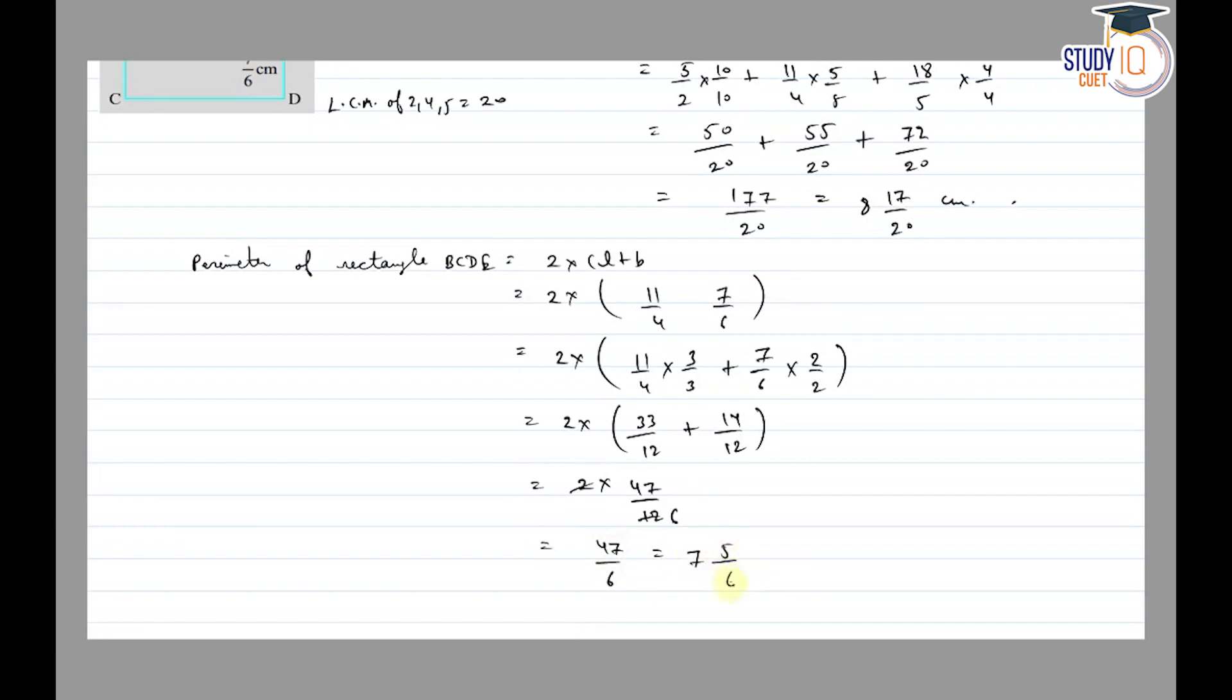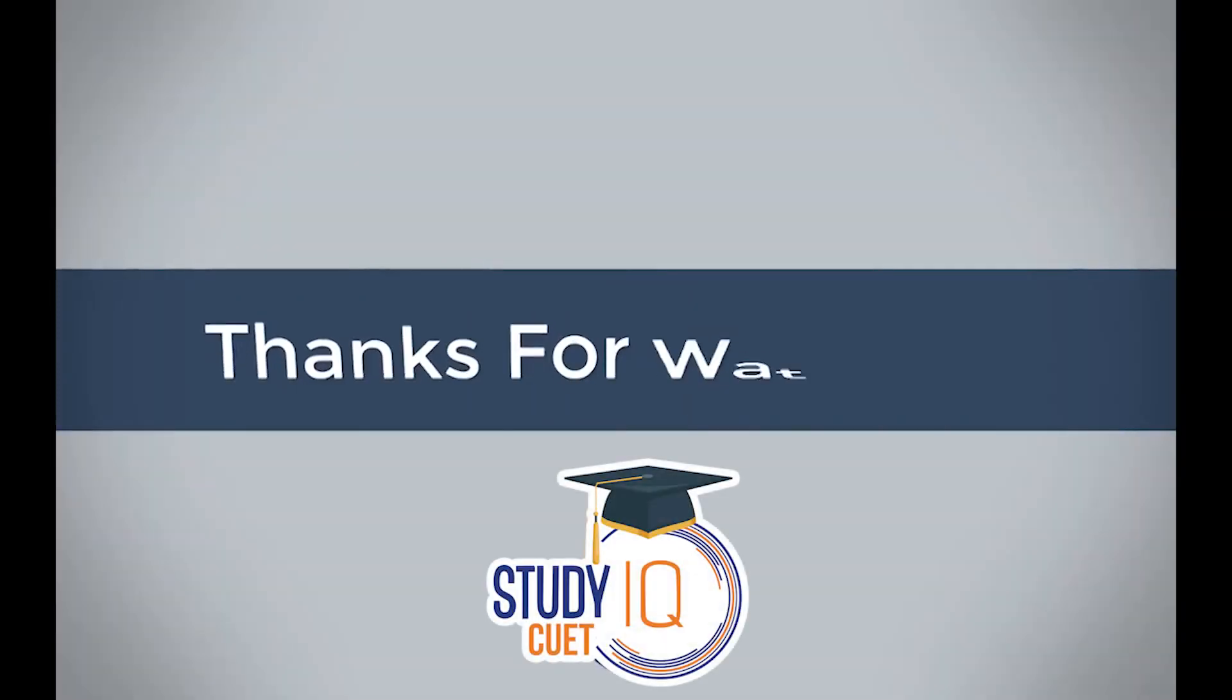So this is 7 and 5 by 6 cm. Therefore, the perimeter of rectangle BCDE is 7 and 5 by 6 cm. Thank you.